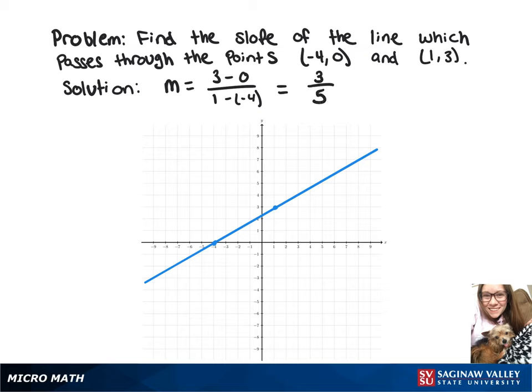So you'll notice if you pick a point on the line and go up 3 and over 5, it'll get you to another point on the line.